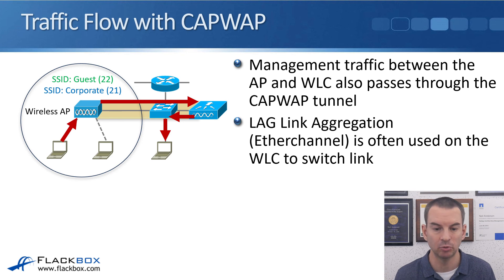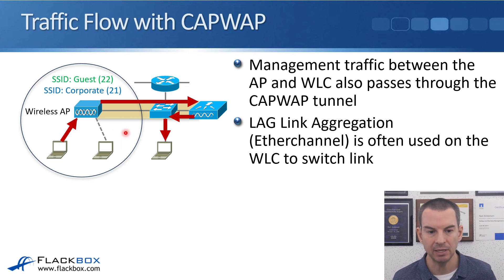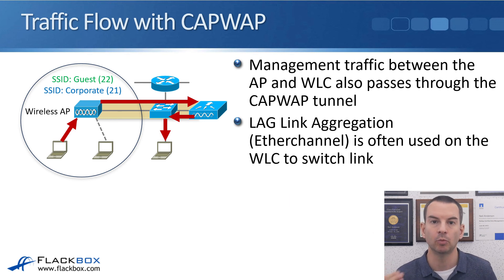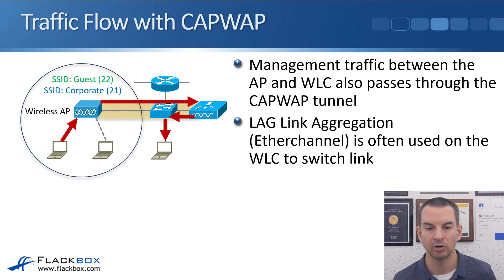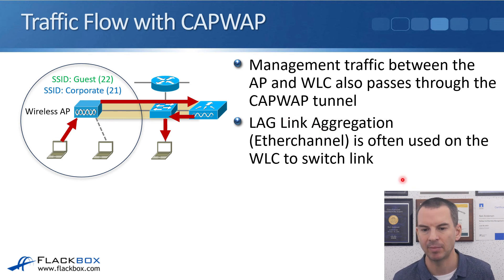In addition to production traffic, the management traffic where the WLC controls the APs also passes through the CAPWAP tunnel. With 100 APs all communicating with the wired network, all that traffic goes through the WLC rather than taking the most direct path. So you need your WLC to have enough bandwidth — typically you'll have multiple physical connections to the switch bundled together into an EtherChannel. In 802.11 and Cisco terminology, this is called LAG — link aggregation.